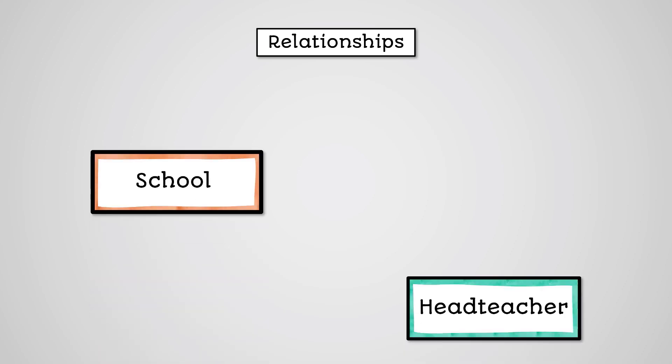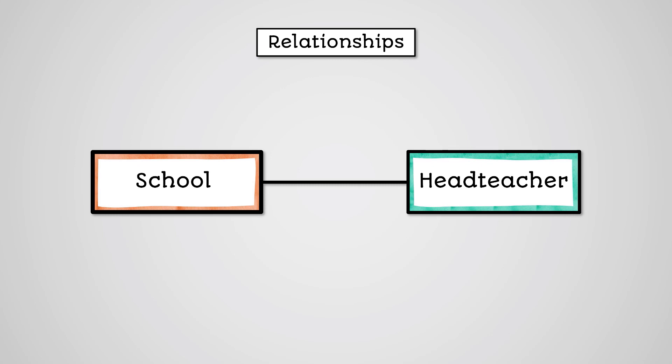We've seen that we link tables together via relationships. There are three types of relationships between tables. Think about a table called school and a table called head teacher. There is one school and only one head teacher. This is a one-to-one relationship.